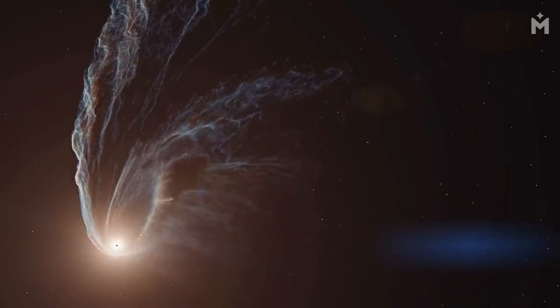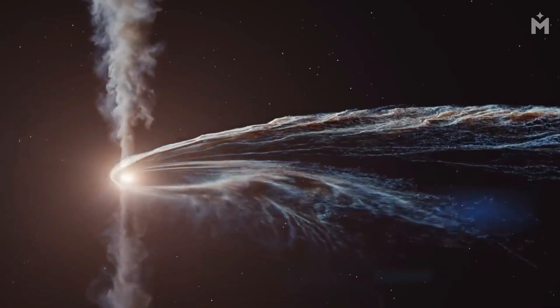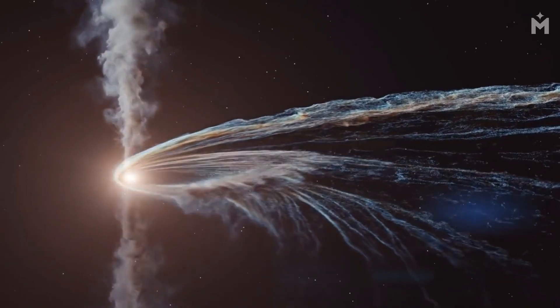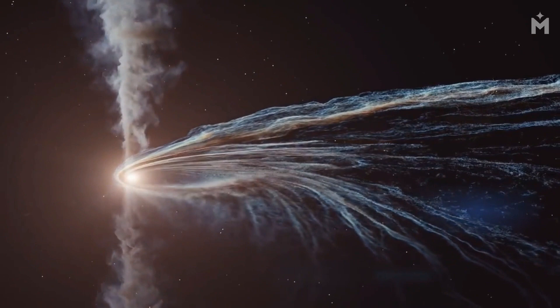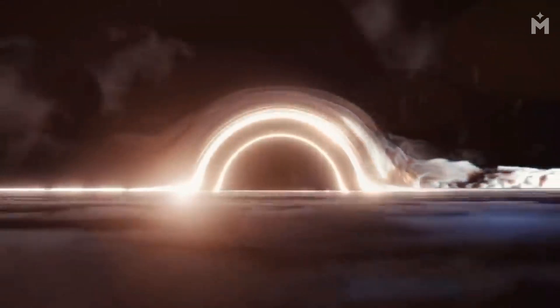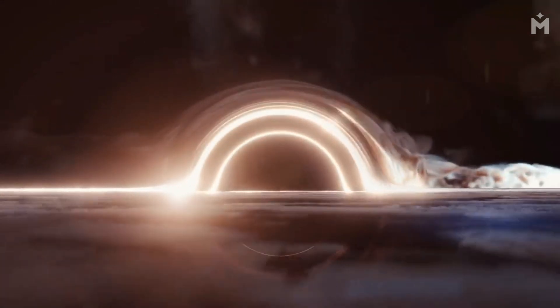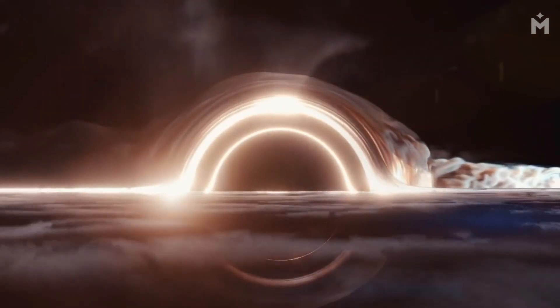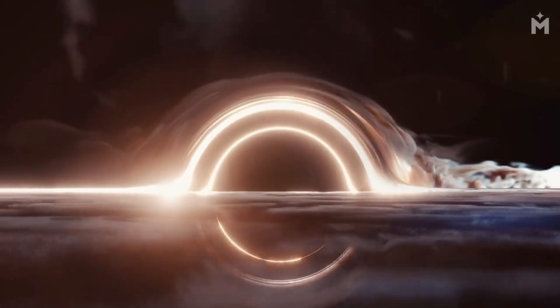As the matter in the accretion disk continues to fall towards the black hole, it starts to form clumps. These clumps are pulled towards the black hole by its gravity and start to orbit around it. But the gravitational force of the black hole is so strong that it can actually tear these clumps apart. The clumps are torn into smaller and smaller pieces as they get closer and closer to the black hole. Eventually, they get so close that they are pulled into the black hole and disappear from our universe.